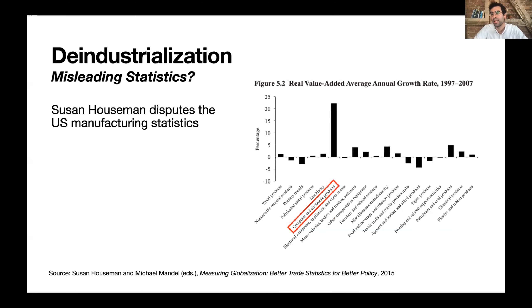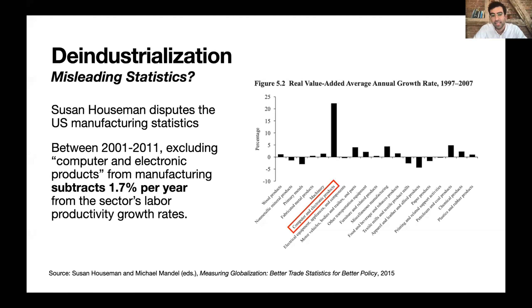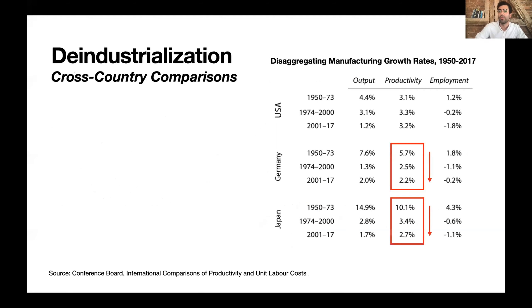That might make it seem like productivity has been steady in the US. But Susan Houseman at the Upjohn Institute disputes this, showing that if you disaggregate manufacturing, productivity growth has actually been slowing in most of the sector. It's one subsector — computer and electronic products — that has seen very high productivity growth, likely due to a mismeasurement issue in how statisticians handle quality changes in chip production. Excluding that subsector subtracts 1.7% per year from manufacturing labor productivity growth rates.